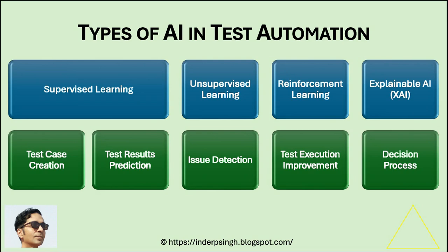Explainable AI, or XAI: explainable AI concepts enable transparency in QA automation with AI and AI in software testing. XAI helps testers understand the decision-making processes of AI systems, allowing trust in the AI decisions.